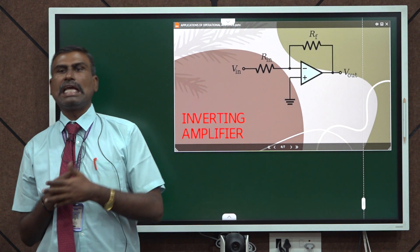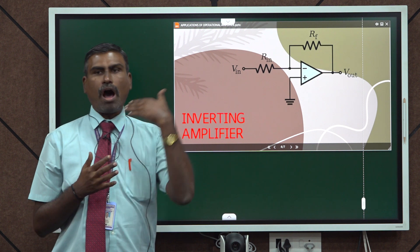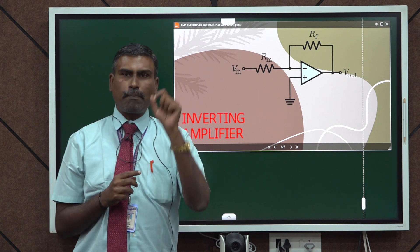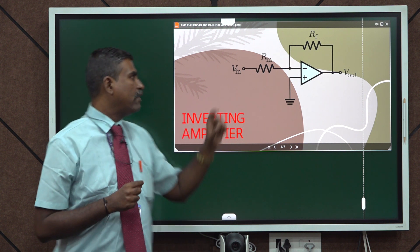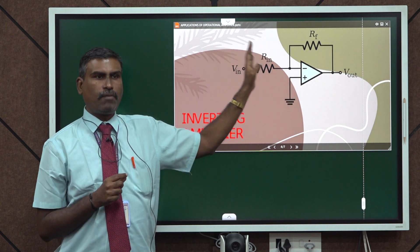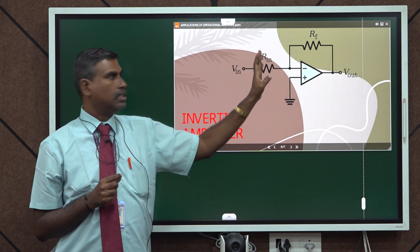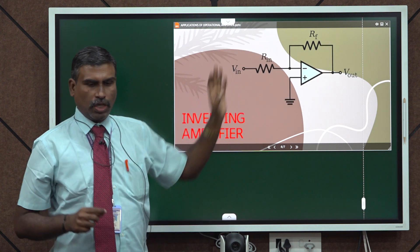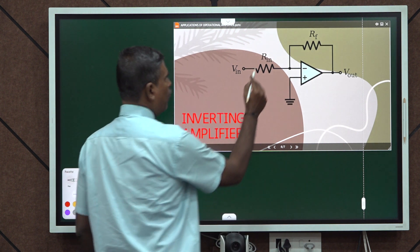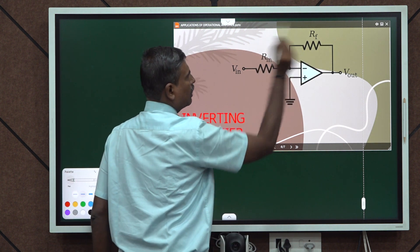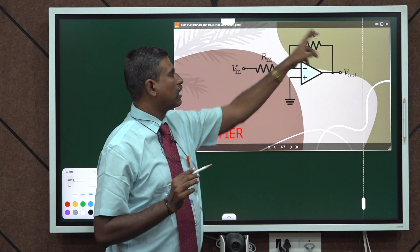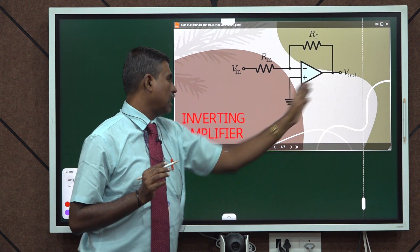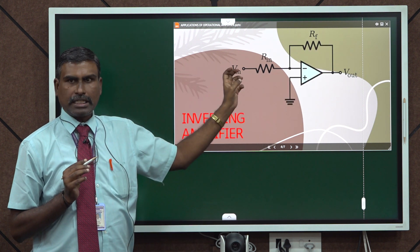Now we move to the inverting amplifier. The operational amplifier has 2 input terminals — one inverting and one non-inverting. If you apply the input voltage to the inverting terminal, that is the second pin of the op-amp, then it is called an inverting amplifier. Here is the simple circuit diagram for the inverting amplifier. It has 2 resistors: an input resistor and a feedback resistor. The output voltage is fed back to the input terminal by means of this feedback resistor.